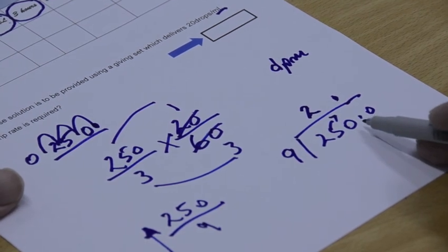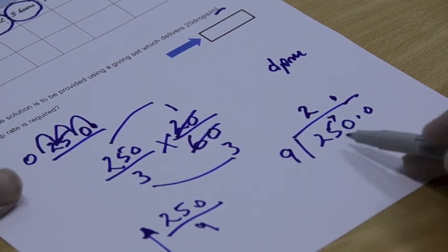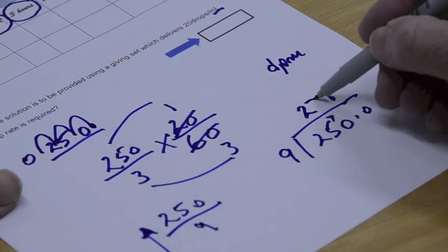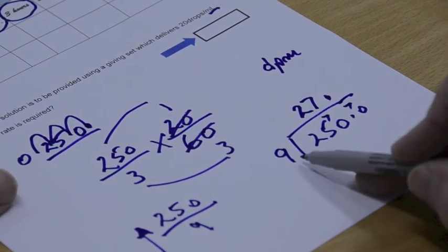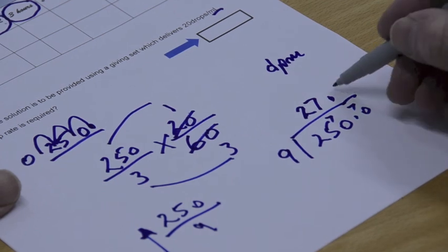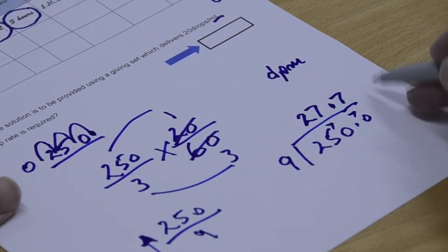6 nines are 54, 7 nines are 63. Well, yes, an 8, 9, that's too much. So it's got to be 7 nines are 63, and we've got 7 over again. Guess what? It'll go into 70 another 7 times, and 7 over and so on and so on.